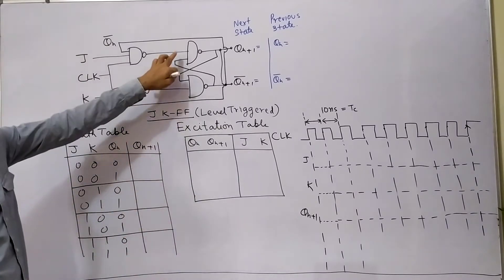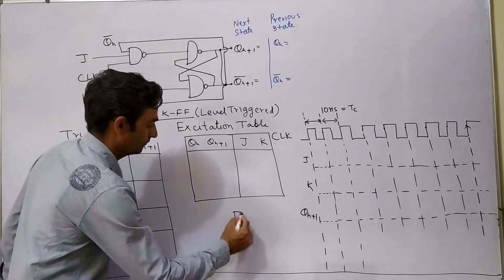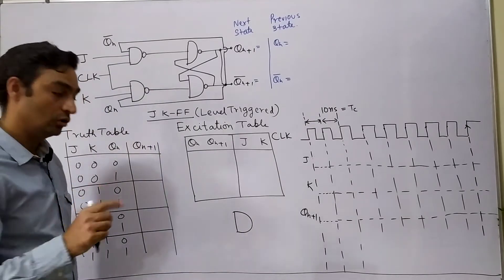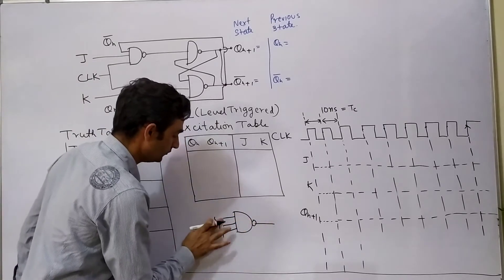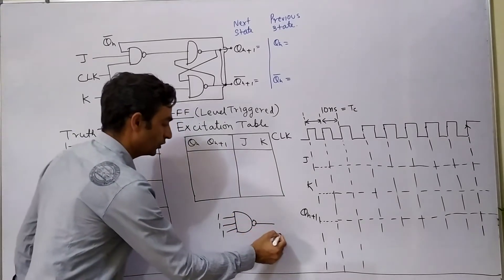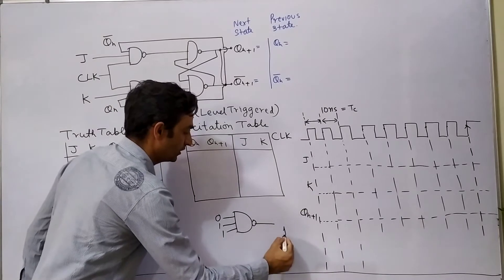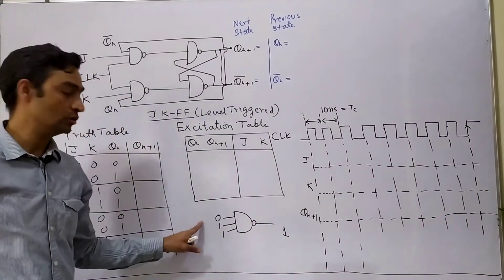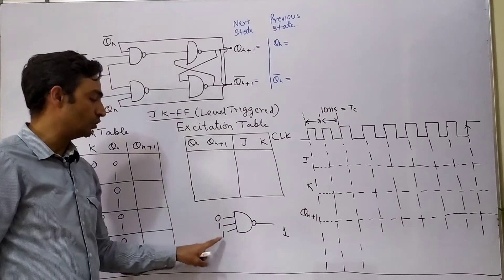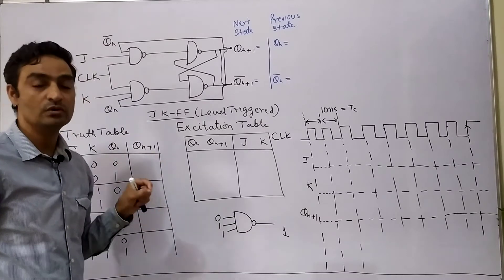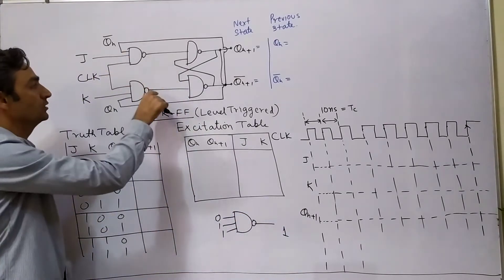Let us understand this circuit — it consists of all NAND gates. NAND is triggered by 0 input, not triggered by 1 input. For a multi-input NAND gate, if all inputs are 1, output is going to be 0. But even if a single input goes to binary 0, output has to go to binary 1. So this circuit is triggered by binary 0, not by binary 1. It changes its output state to high whenever any 0 comes onto the input side of a NAND gate. This is the concept we will use to solve this circuit diagram.